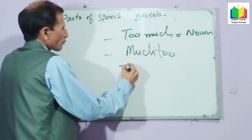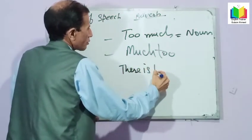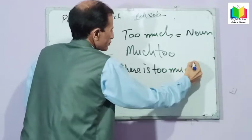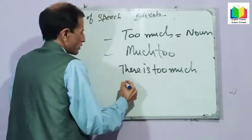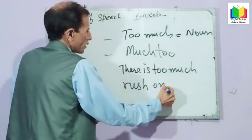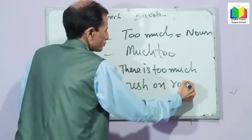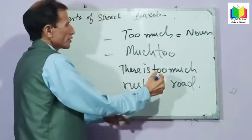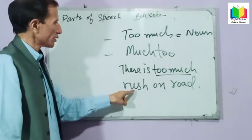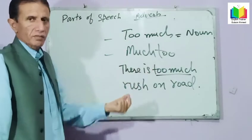For example: there is too much rush on the road. So after 'too much', a noun comes — here 'rush' is the noun.